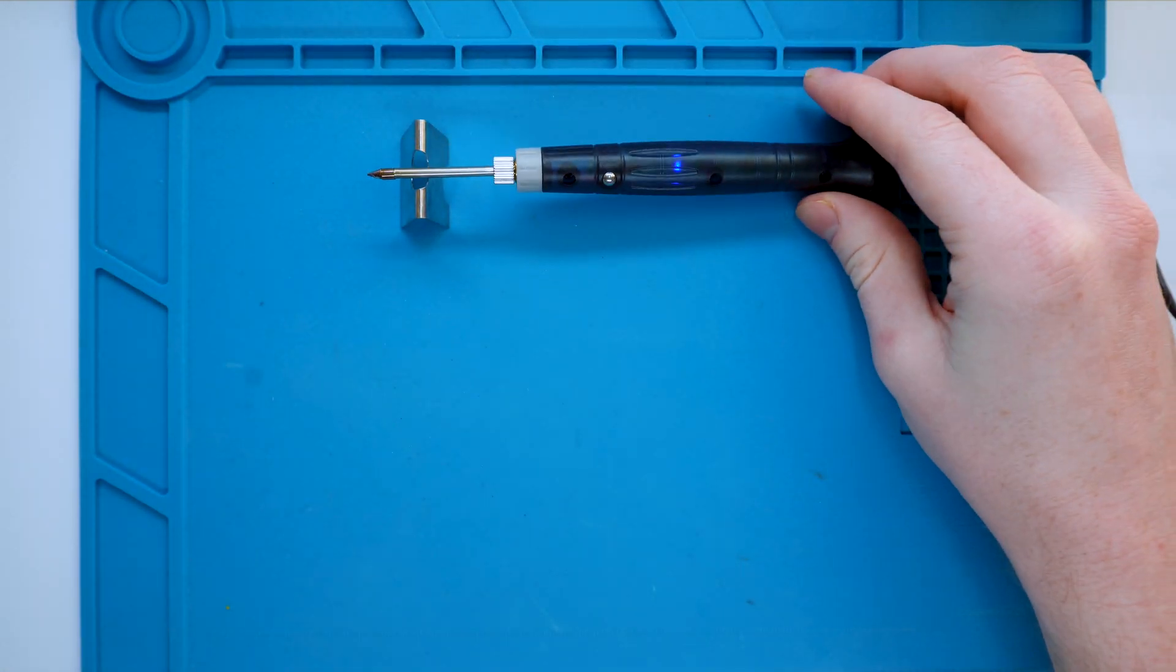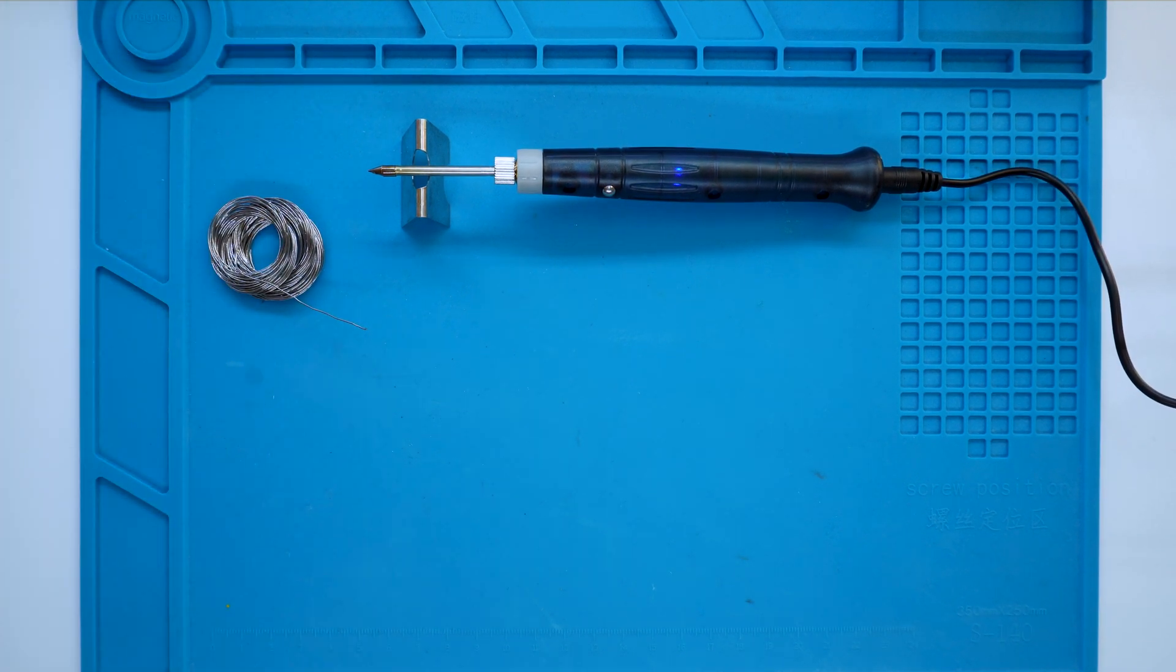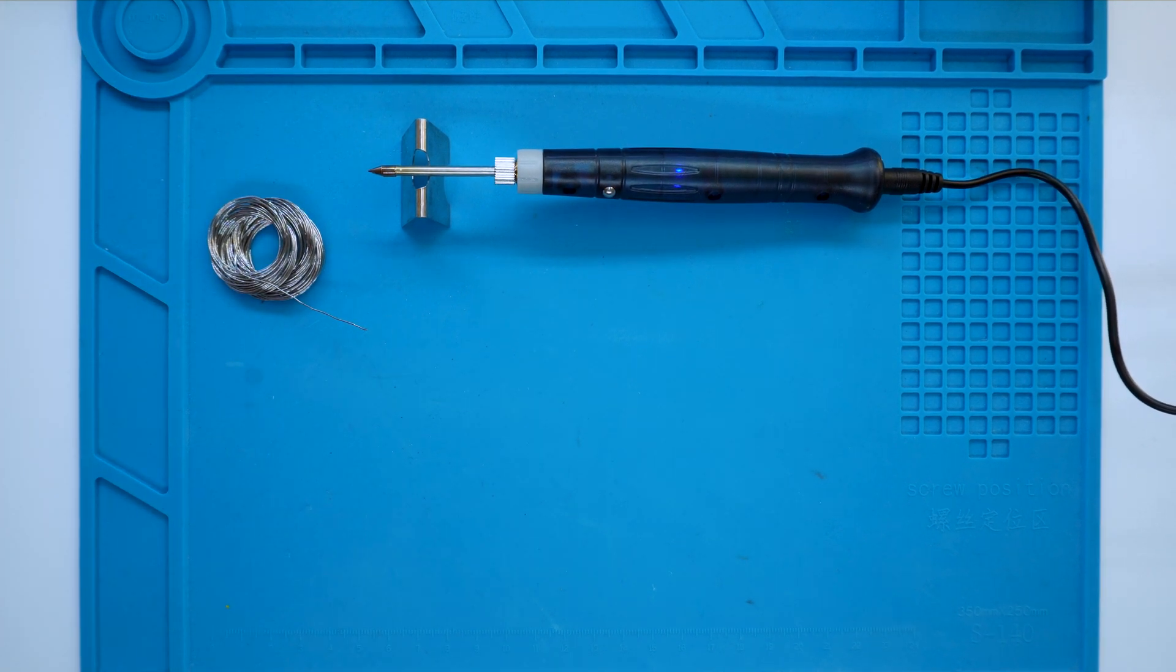Now we want to get our soldering iron switched on as done before, and as you can see the blue light indicates that it is heating up, so I'm just letting it heat up while we set it up.